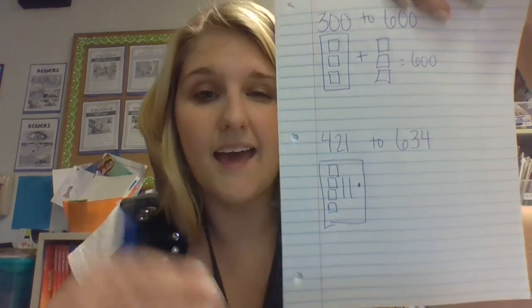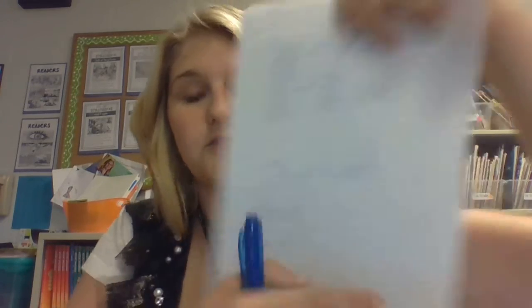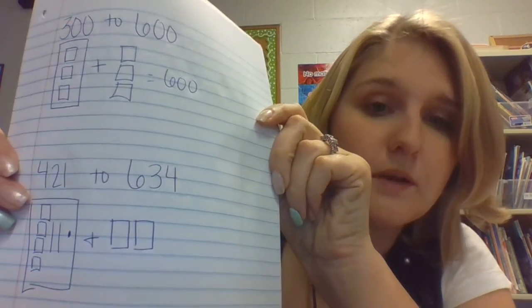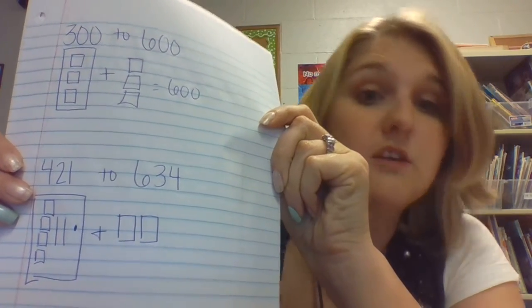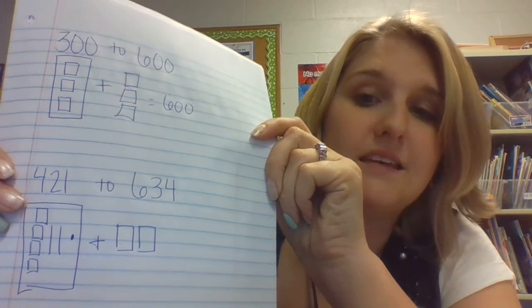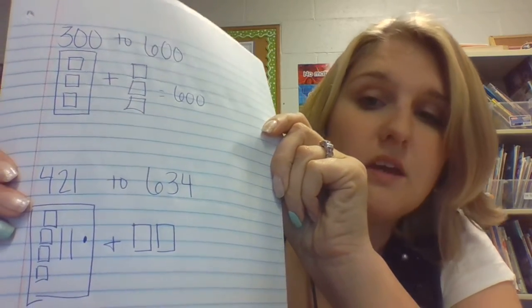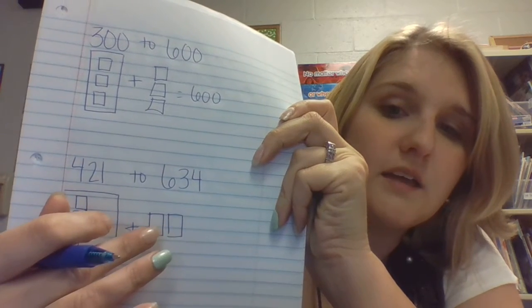Now I have to figure out what do I have to add to that to get to 634. So I'm going to put a plus sign and try adding 100. If I add 100, that gets me to 521. I'm going to try to add another 100, so that would get me to 621. So I'm at 621 — I'm sort of visualizing this in my mind, not writing it down like on the empty number line.